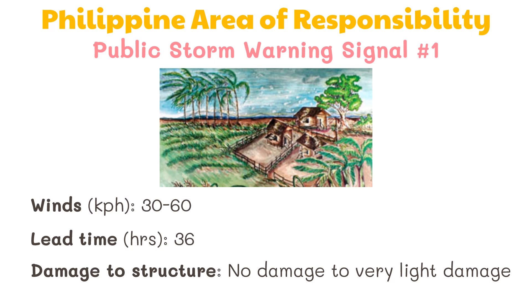Now let's learn about the Public Storm Warning Signal system so we will know how strong a typhoon is. In Signal Number One, winds of 30 to 60 kilometers per hour may be expected in at least 36 hours. There may be no damage to very light damage to structures. What should we do? Watch out for big waves and be updated if there's a severe weather bulletin issued by PAGASA.